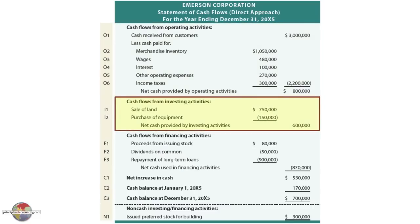The next section, the investing activities section, shows proceeds received from sale of land — $750,000 — and purchase price of equipment — $150,000. Basically, monies received from selling investment-type assets or monies dispersed to buy investment-type assets.